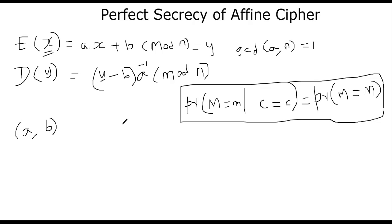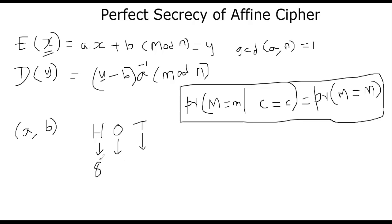Suppose your message is say 'hot'. How will we encrypt it? We map h to whatever alphabet value. Let's assume we are working with the English alphabet — a means 0, b means 1, z means 25 because you start with 0. So h gets mapped into some number, o gets mapped into another number, and t gets mapped into another number. Then we call E(x) for each of these numbers and get another number. We decrypt using y minus b, times a-inverse, mod n. Let's say h maps to 8. E(8) will be a times 8 plus b, where a and b are two secret numbers that only the sender and receiver know.